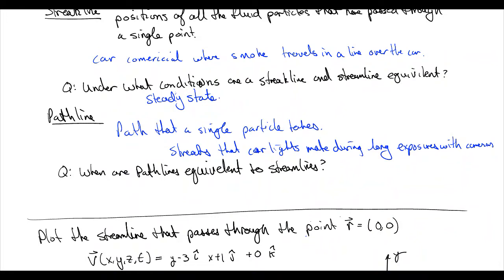When we look at pathlines we have single individual particles that we image, usually using a long exposure so they create streaks. This is really useful because with short exposures you get short streaks. If you have a bunch of particles in a flow and look at their pathlines, you can draw arrows on these short streaks and get a rough idea of the 2D or 3D velocity field in the fluid.